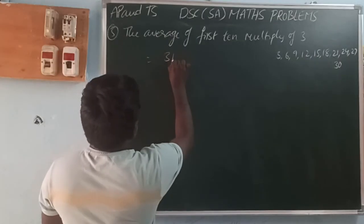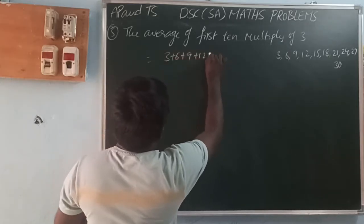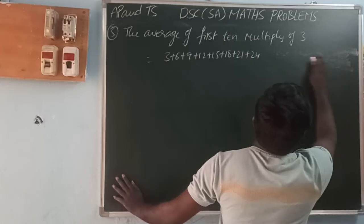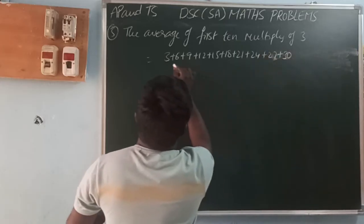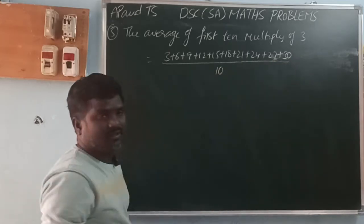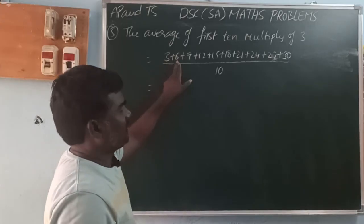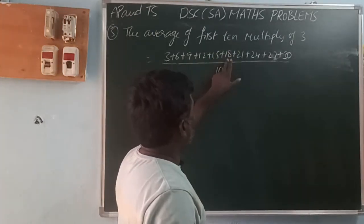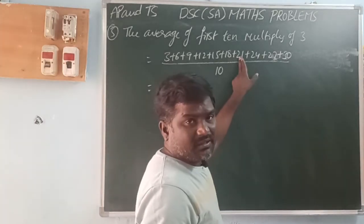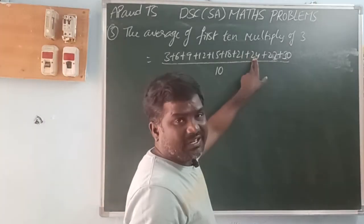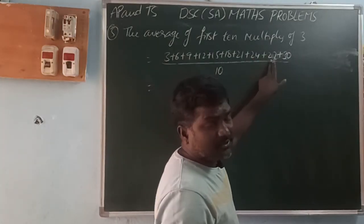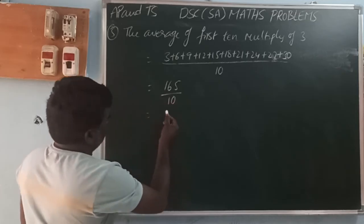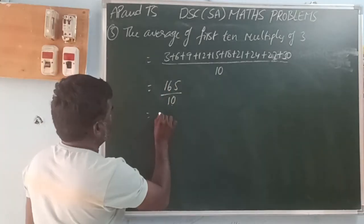Sum: 3 + 6 = 9, + 9 = 18, + 12 = 30, + 15 = 45, + 18 = 63, + 21 = 84, + 24 = 108, + 27 = 135, + 30 = 165. So the sum is 165. Dividing by 10: 165 / 10 = 16.5. The average of the first 10 multiples of 3 is 16.5.